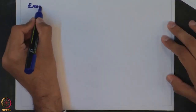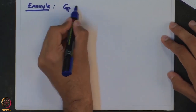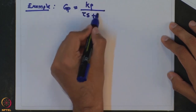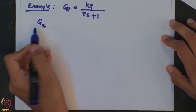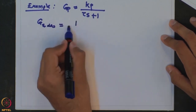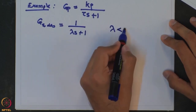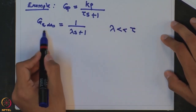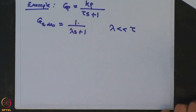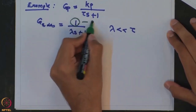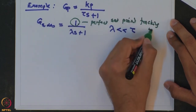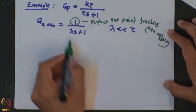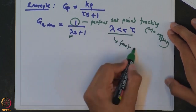Let us take an example of a first order process. We want this process to undergo a servo response such that the desired closed loop transfer function is 1 over (λs + 1), where λ is much smaller than τ. What we are interested in is perfect set point tracking — a gain of 1 means no offset, and λ being less than τ means it is a fast response.